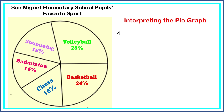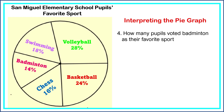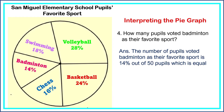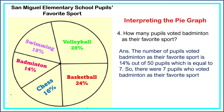Last question: How many pupils voted for badminton as their favorite sport? The number of pupils who voted for badminton is 14% out of 50 pupils, which is equal to 7. So there were 7 pupils who voted for badminton as their favorite sport.